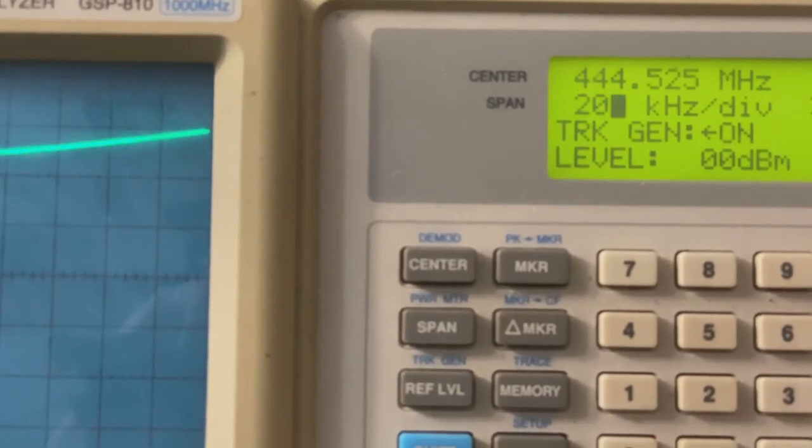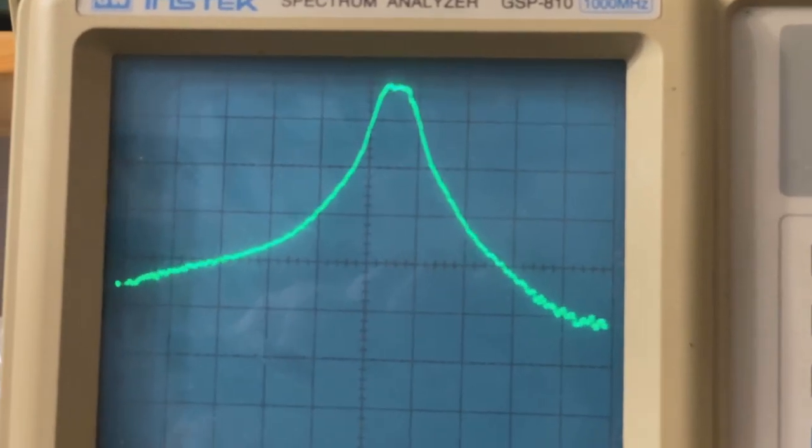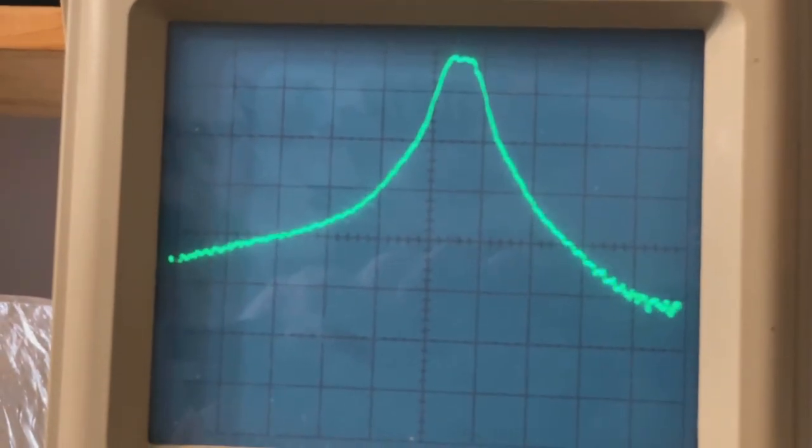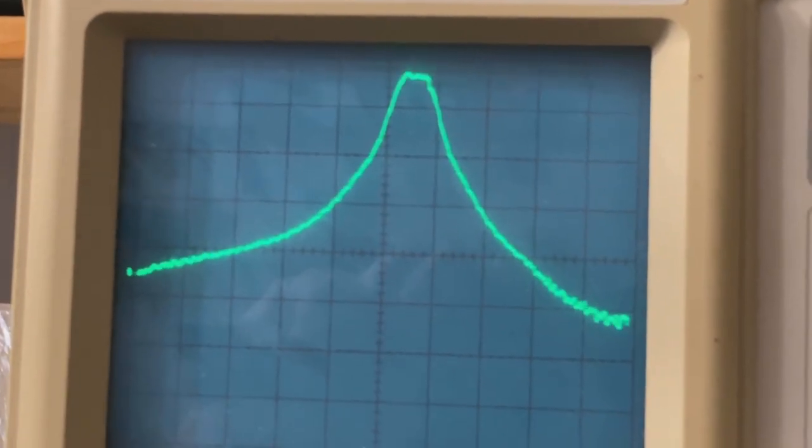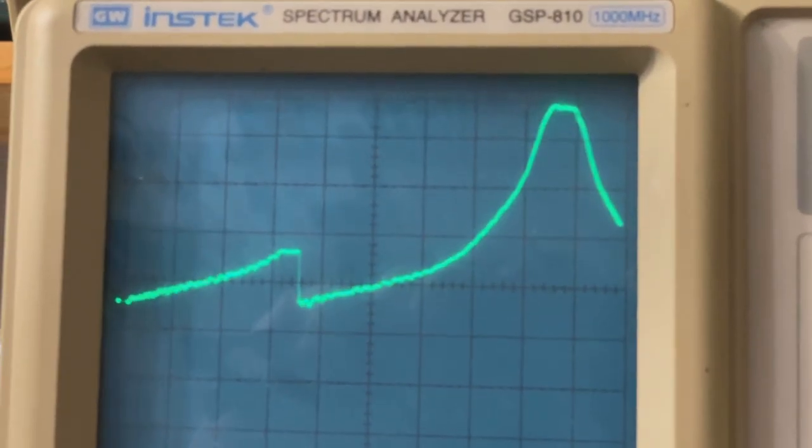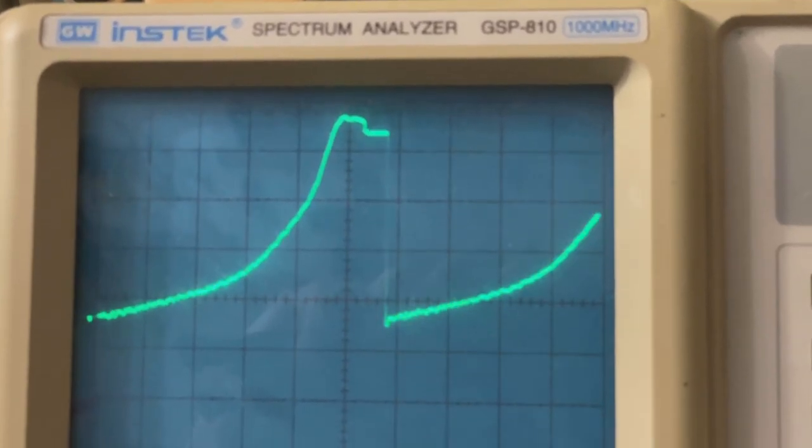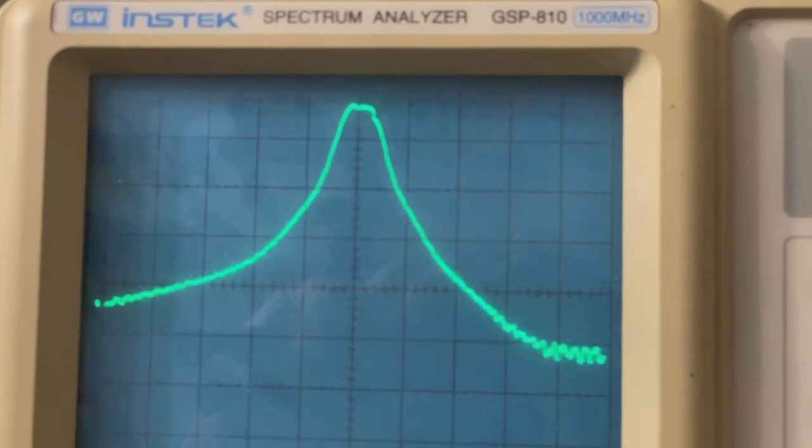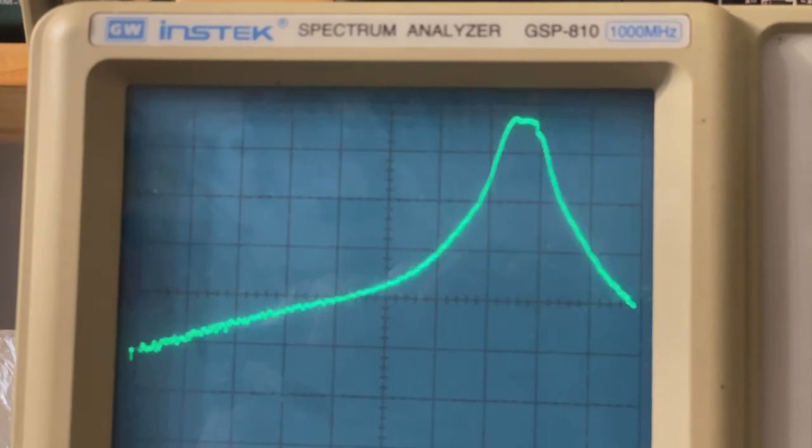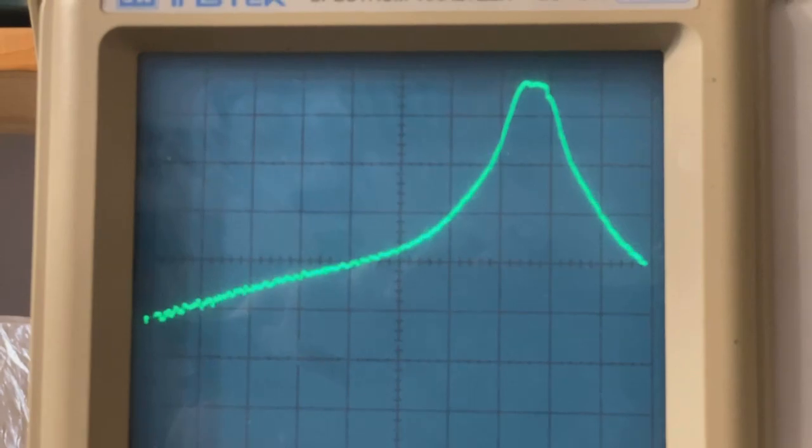So that's centered on 444.525. I'm going to move the center frequency back up to 446.975, and that's what it's centered on. And I'll show you where 433 is—it's down there. So now the center is on 433. Now you can see it even drops further as it goes down the band.